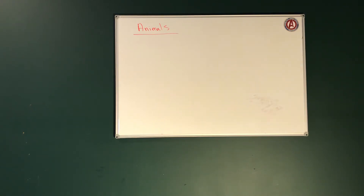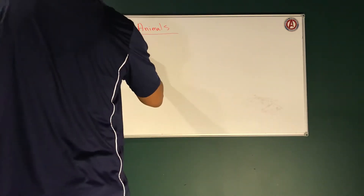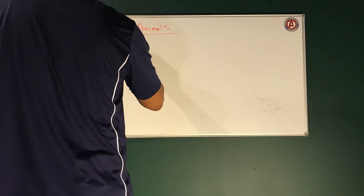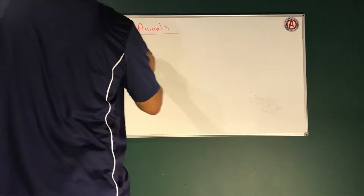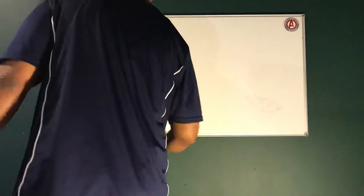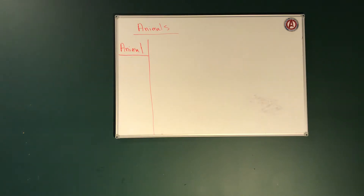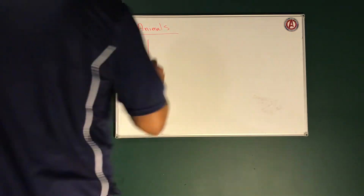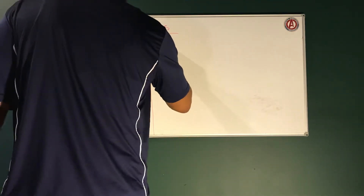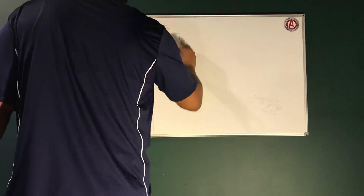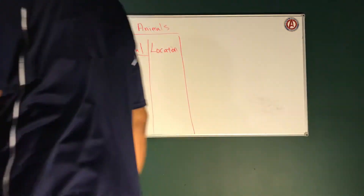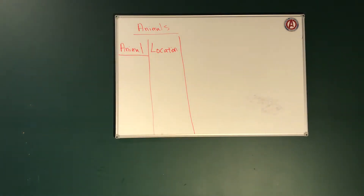So we're going to first look at a chart. We're going to create a chart, then fill it in and put it in the classroom. The first thing we're going to be looking at is animal. Take out your journal and write the word animal. Next, we're going to be looking at location. Location is where a particular animal is from.